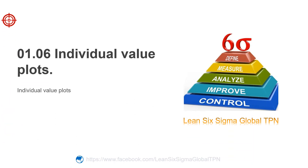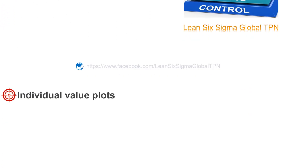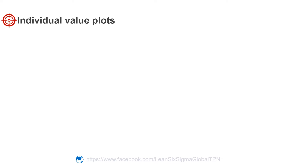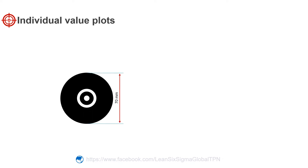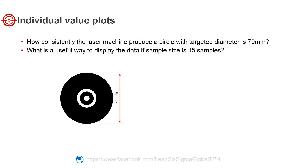Hello friends. Today we talk about the individual value plot. Suppose that we want to assess how consistently the laser machine produces a circle with a target diameter of 70 mm. If we take a random sample of 15 samples from each of two production lines, what is a useful way for us to display the data?